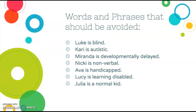Words and phrases that should be avoided: Luke is blind. Carrie is autistic. Miranda is developmentally delayed. Nikki is nonverbal. Ava is handicapped. Lucy is learning disabled. Julia is a normal kid.